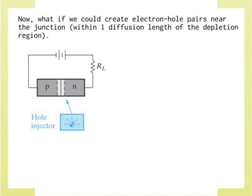Thinking back to the MOSFET equivalent circuit — a voltage-controlled current source — the BJT is also a current source, but controlled by another current, not a voltage. It's a current-controlled current source. The only difference is I'm somehow introducing carriers into the junction region, allowing me to control the reverse bias current of a PN junction. How do we introduce carriers? A good way to introduce holes is by shining light — that creates electron-hole pairs. But in a chip package you can't shine light, so you want to do this electrically.